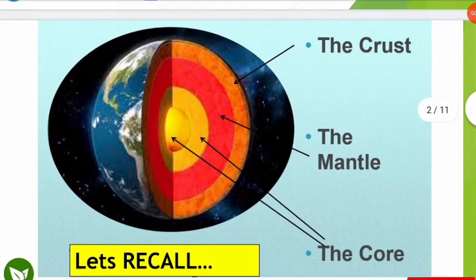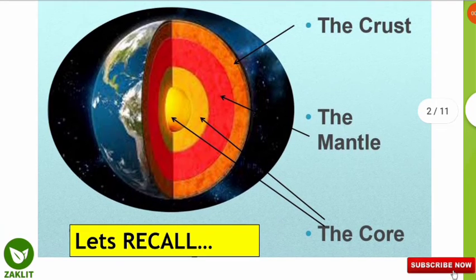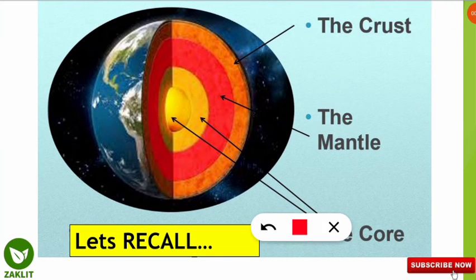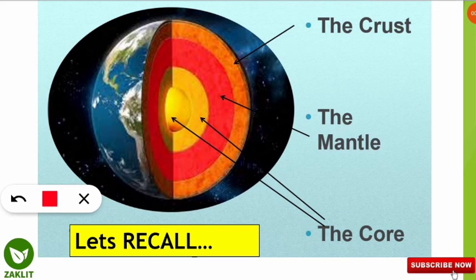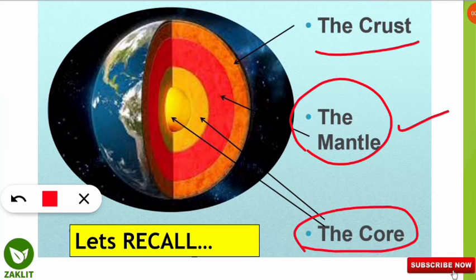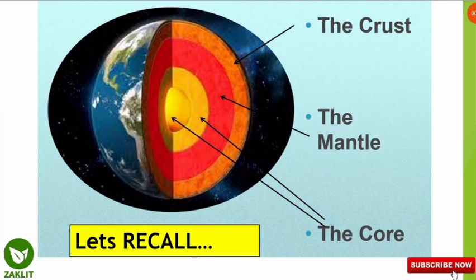Let us recall what we discussed in the last video of this series. We discussed about the lithosphere, mostly the crust part — the oceanic crust and continental crust — and the upper mantle portion called the asthenosphere. Today we will discuss the mantle and the core region of the earth, which will also be helpful in the environmental geology part.